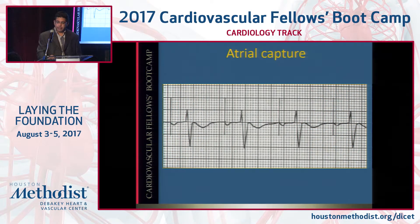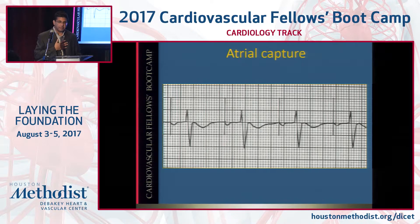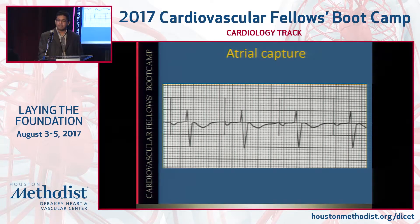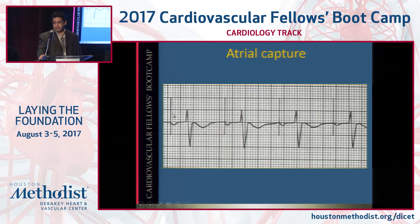Atrial capture: you can see pacing spikes followed by P waves. Pacing spikes are easy to see with epicardially placed pacer wires or a floating temp wire when you're using lots of power. In older pacemakers, every lead had one electrode, so the positive was at the tip and negative was in the can — leading to massive pacing spikes in textbook EKGs. In modern practice, the positive and negative electrodes are very close together, so spikes are smaller and you have to look for them. Pacing spike followed by P wave is atrial capture.